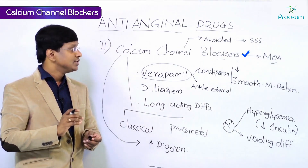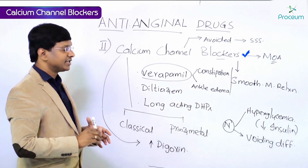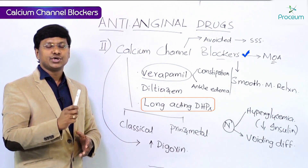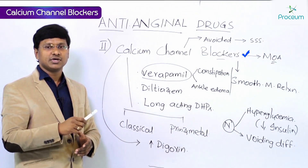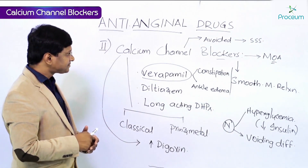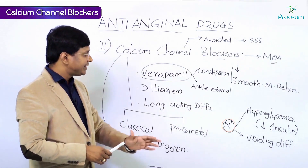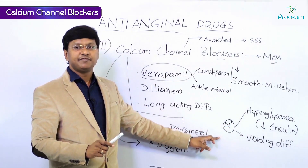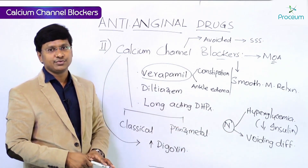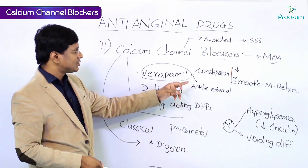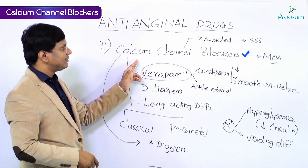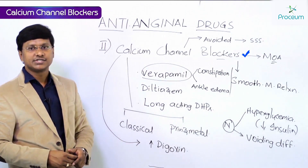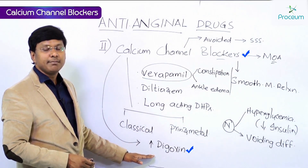In summary, calcium channel blockers are anti-anginal drugs, but we don't use all of them. We mainly use verapamil, diltiazem, and long-acting dihydropyridines. Short-acting dihydropyridines like nifedipine should not be used as they precipitate angina by causing tachycardia. Nifedipine causes hyperglycemia by reducing insulin release and voiding difficulty in elderly by relaxing the urinary bladder. Verapamil causes constipation and ankle edema. Calcium channel blockers should be avoided in sick sinus syndrome along with beta blockers, and they increase plasma digoxin concentration by decreasing its excretion.